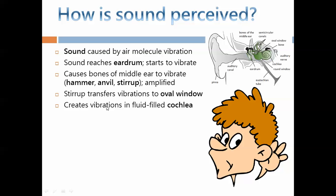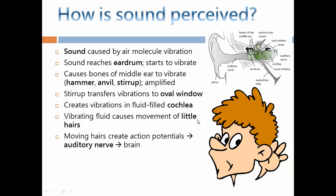Then this creates vibrations in the fluid-filled cochlea. The vibrating fluid causes the little hairs to actually be stimulated and that will send information through neurons to the auditory nerve which will be connected to the brain. And our brain will then process that information.